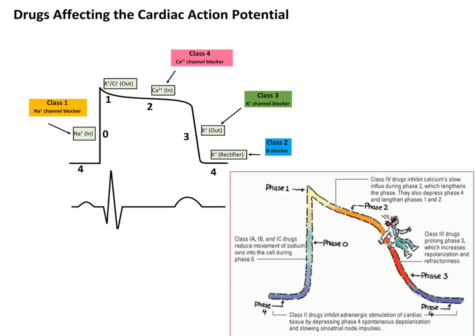Class one drugs are sodium channel blockers, broken up into 1a, 1b, and 1c. I'm not testing you on which specific drugs belong to which subclass — just remember we're talking about the movement of sodium. Class four are our calcium channel blockers, so diltiazem or Cardizem blocks the movement of calcium. Class three are our potassium channel blockers. Class two are our beta blockers, which you should be pretty familiar with by now.